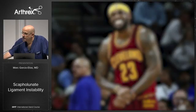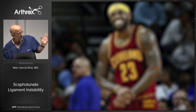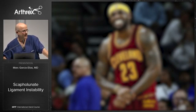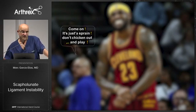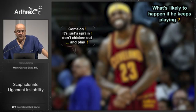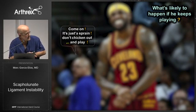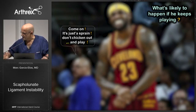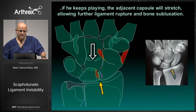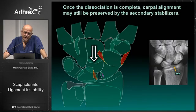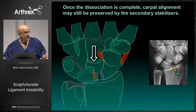This injury happened only eight seconds before winning the championship. He had a free kick to take, and the coach said to just go on and play. The question is: what's likely to happen if he keeps playing? If he does, the joint capsule will stretch, allowing further ligament rupture and bone subluxation. Once the dissociation is complete, carpal alignment will still be preserved by the secondary stabilizers — and we'll talk about that.